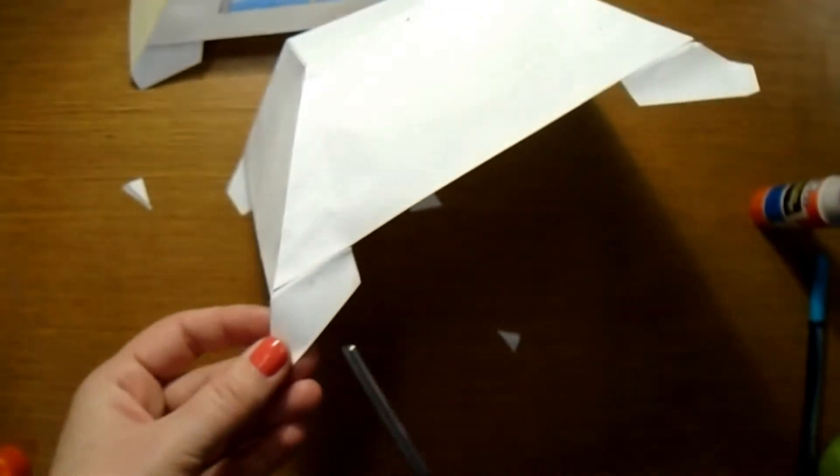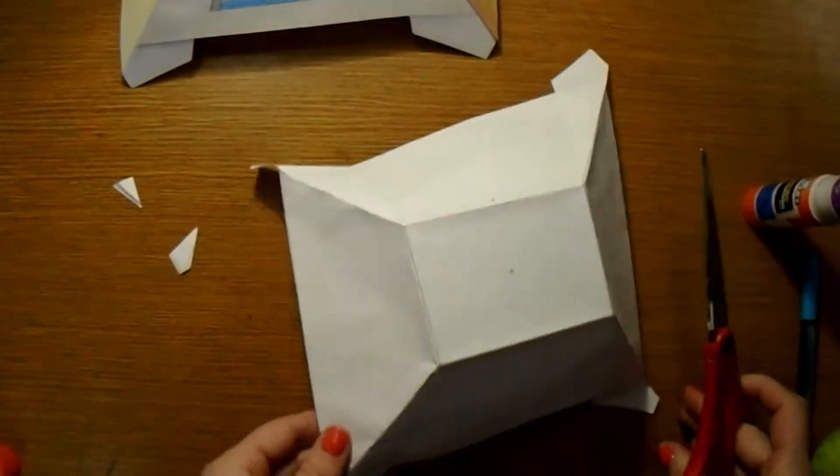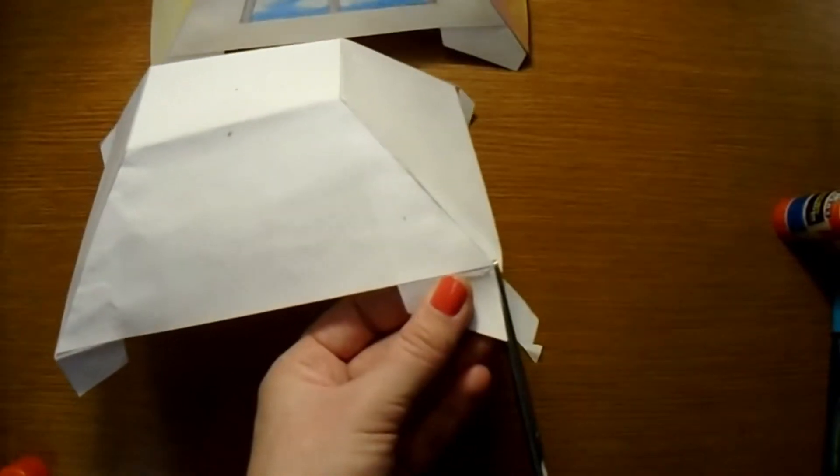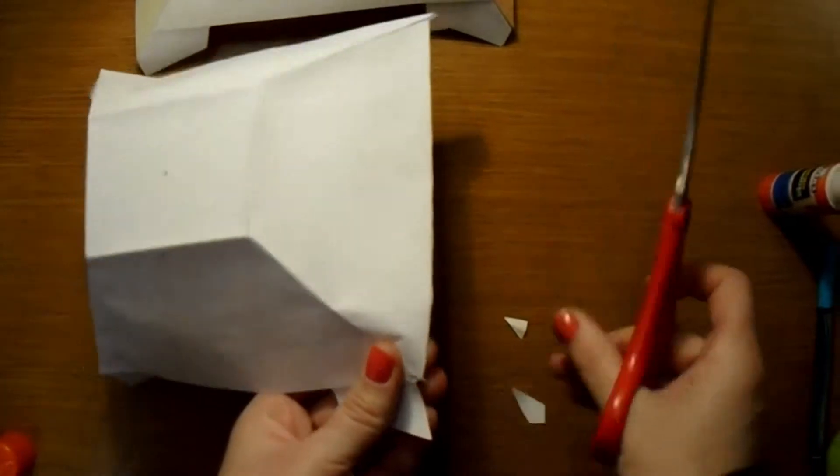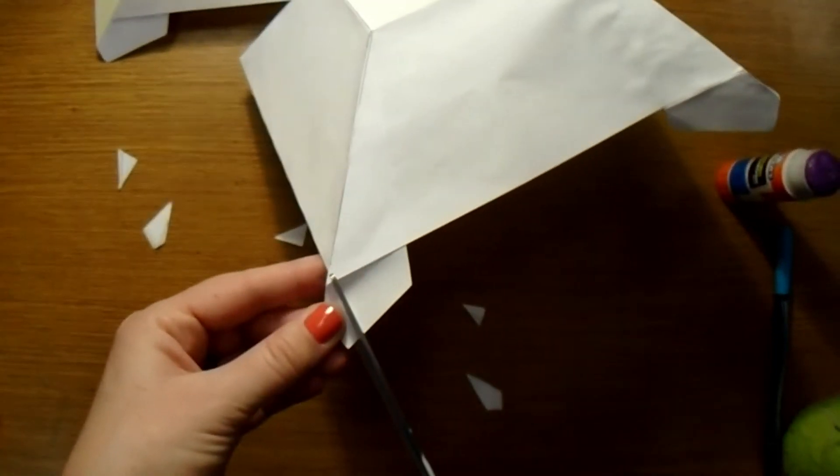And then these corners that are still sticking out, I'm going to cut those corners straight up and down. Because what we're going to end up doing is using those corner pieces as tabs to glue this to a background paper.